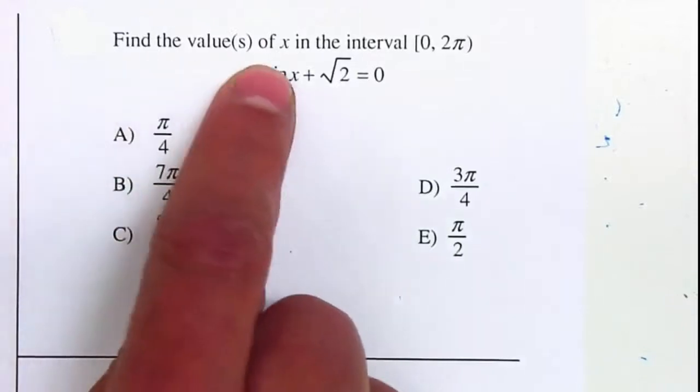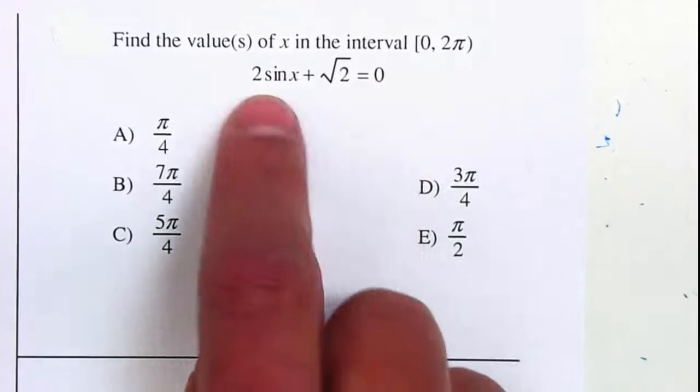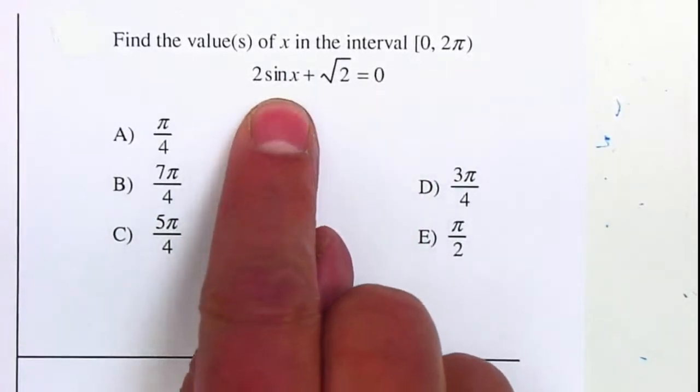Find the value or values of x in the interval 0 to 2π. We have an equation that includes sine. In order to solve it, I want to be able to leave the sine by itself.